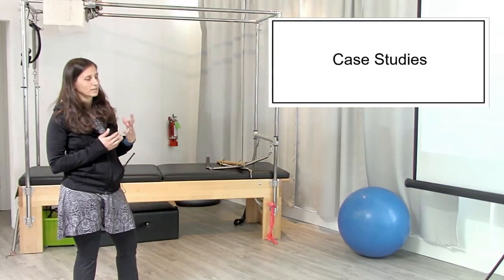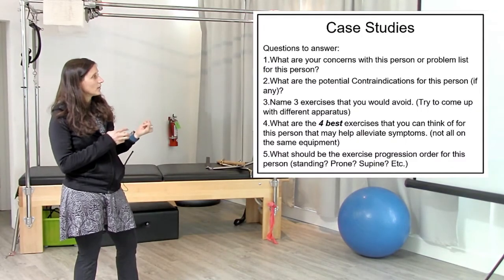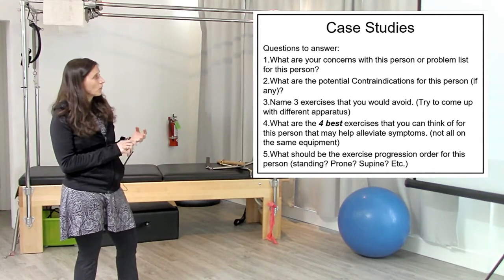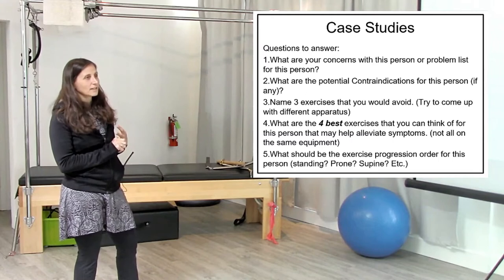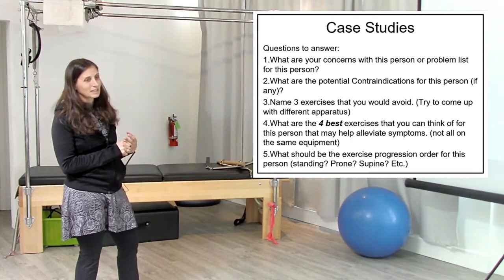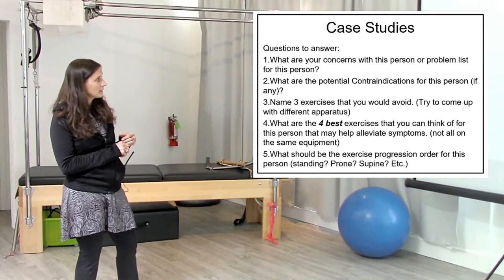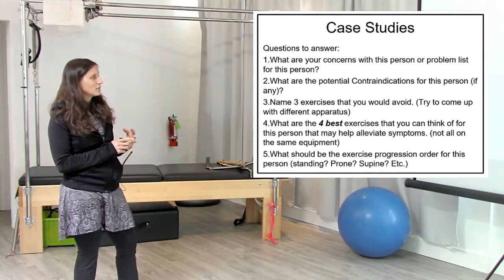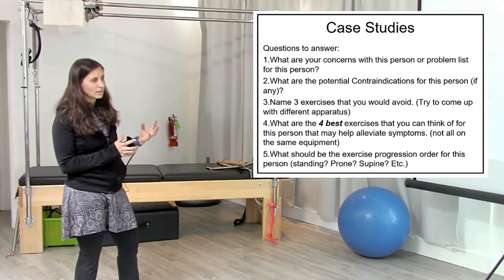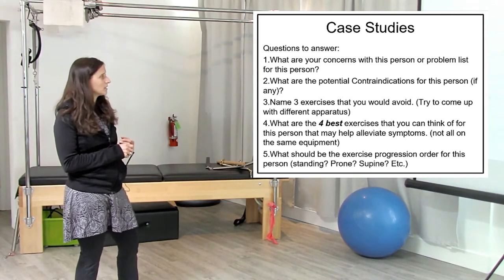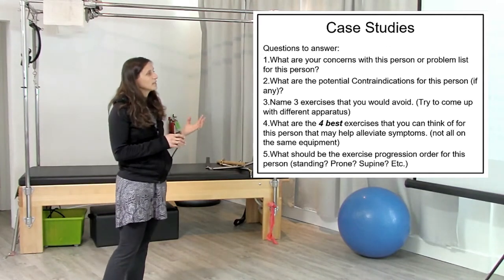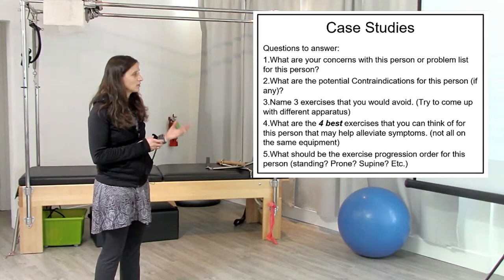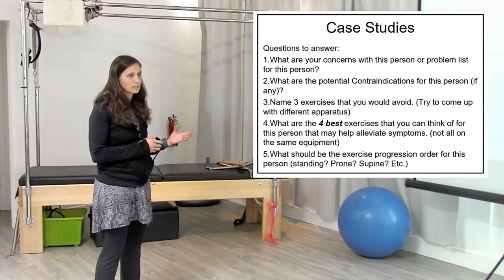The questions we're trying to answer when we read over the case studies are: what are your concerns with this person, or the problem list for this person; what are the potential contraindications — and there are a lot less with the hip and knee than we had for the back — but there still may be some. Name three exercises you would avoid because of whatever is going on with that person, what are the four best exercises for this person that may help alleviate symptoms, and what should the exercise progression be for that person?